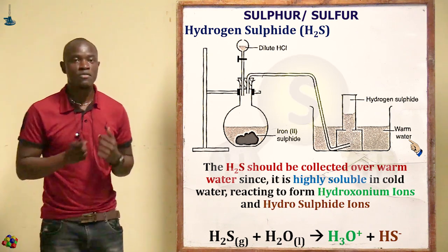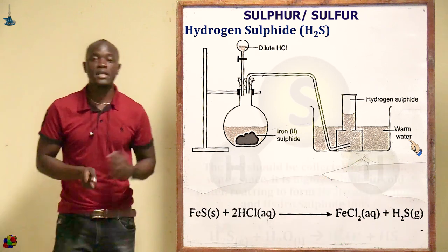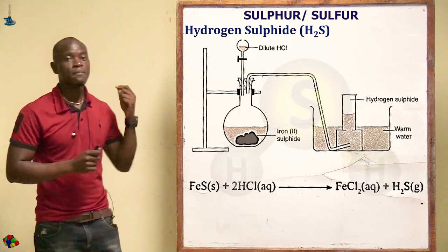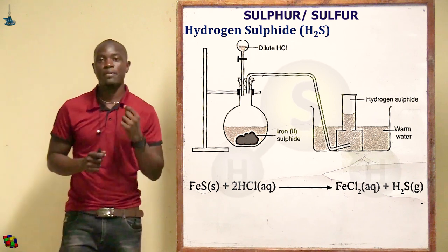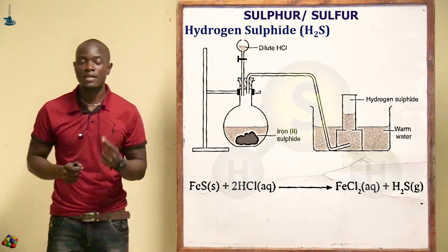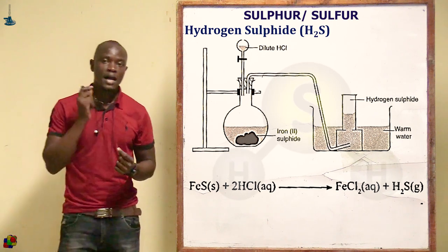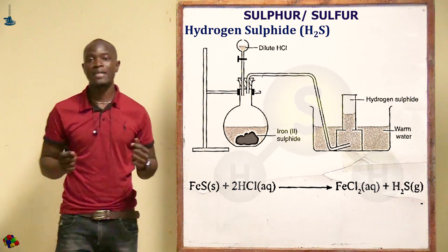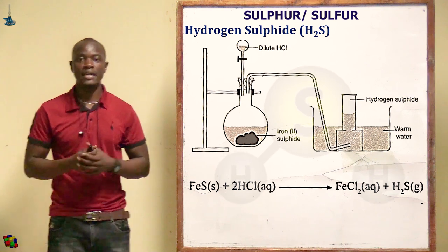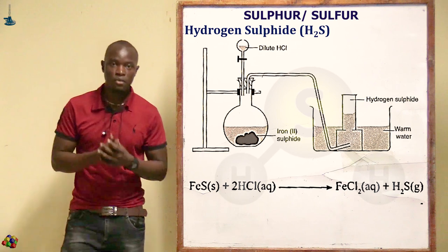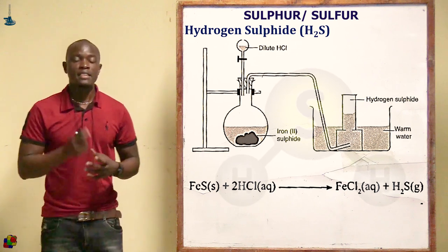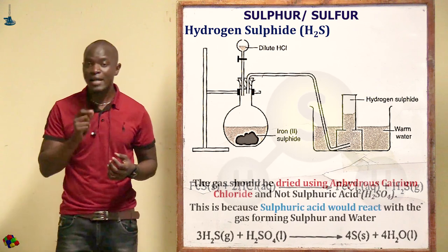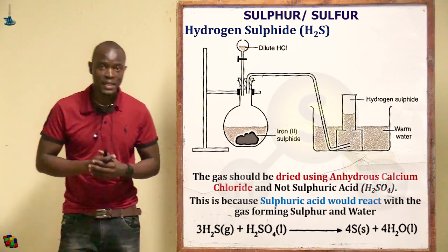The equation for the reaction is: iron(II) sulfide + hydrochloric acid → iron(II) chloride + hydrogen sulfide (gas). This gas must be collected over warm water since it is highly soluble in cold water.